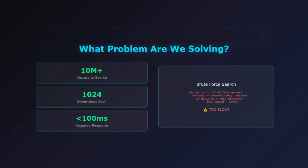Imagine you have a database with 10 million high-dimensional vectors — maybe embeddings from a language model. A user asks a question, and you need to find the most similar documents. The naive approach? Compare your query vector to every single one of those 10 million vectors. That's potentially billions of calculations for just one search. Even with modern hardware, this could take seconds or minutes. In production systems serving thousands of users, this simply doesn't scale.